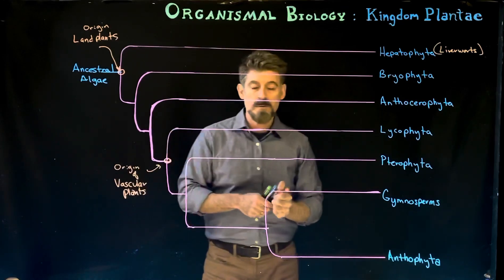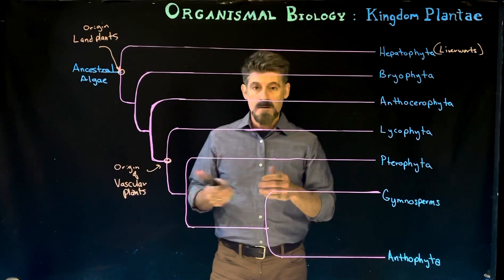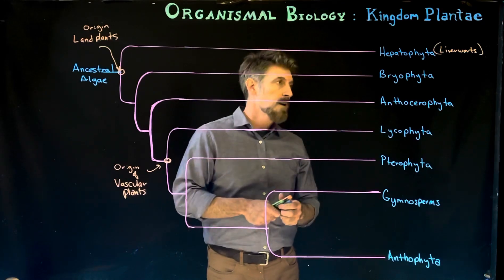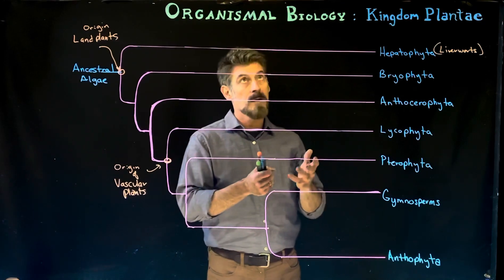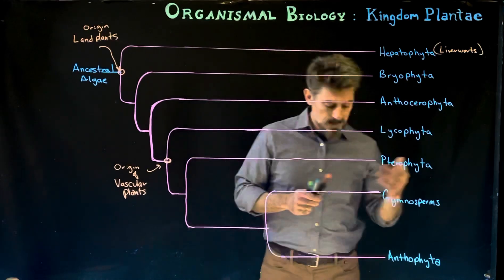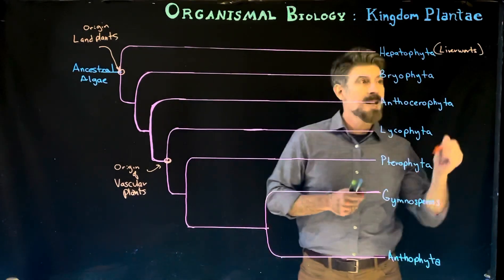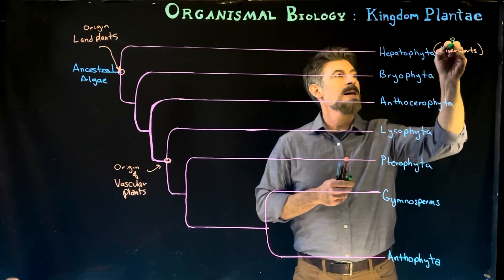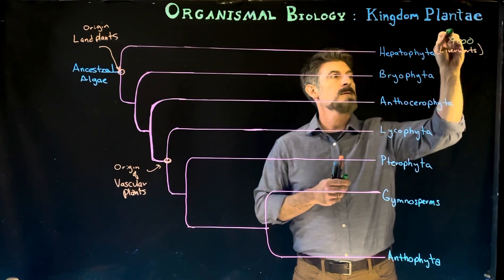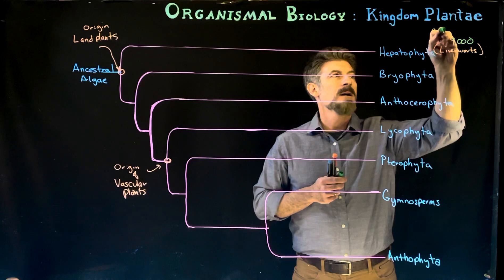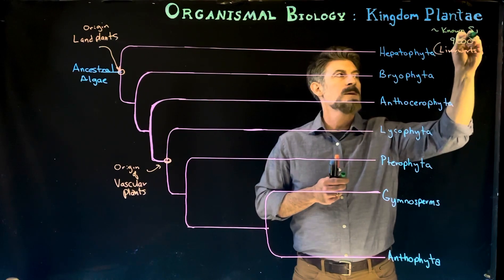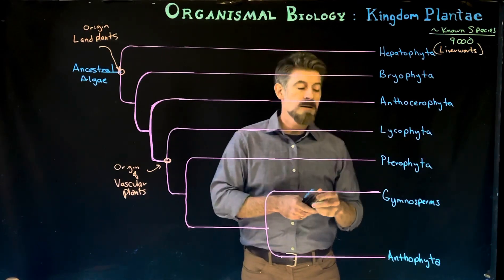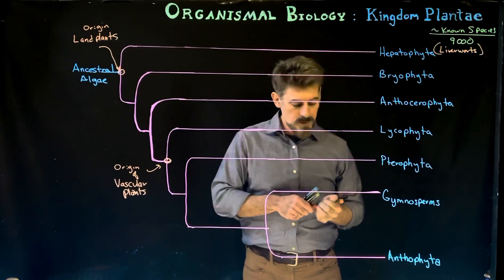That's going to be one of the terminology we refer to: vascular versus non-vascular plants. That'll have to do with xylem and phloem, and the way in which they move the fluids through their body and can create structural support for themselves. The liverworts are a group that contains about 9,000 known species. This is a rough number of known species.